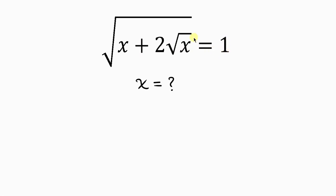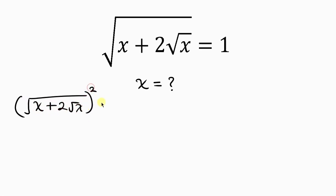Our first step will be to get rid of these square roots, and we do that by taking the square of both sides. Taking the square of the left hand side — the square root of x plus 2 root x — and also the square of the right hand side, which is 1. The square cancels the square root, leaving x plus 2 root x equal to 1.